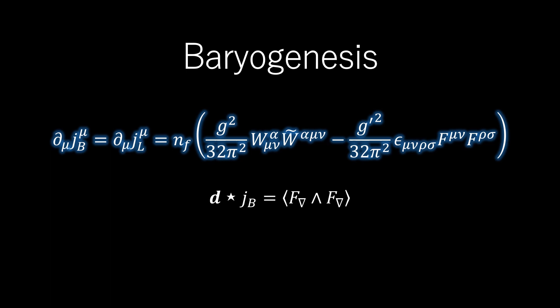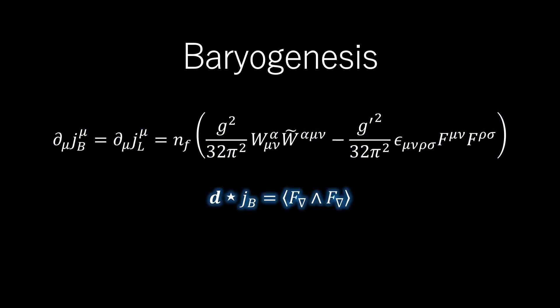Where F-Nabla is the field strength of the electroweak field, the curvature of a SU-2 principal connection Nabla. In more intrinsic notation and ignoring numerical constants, the statement is that,